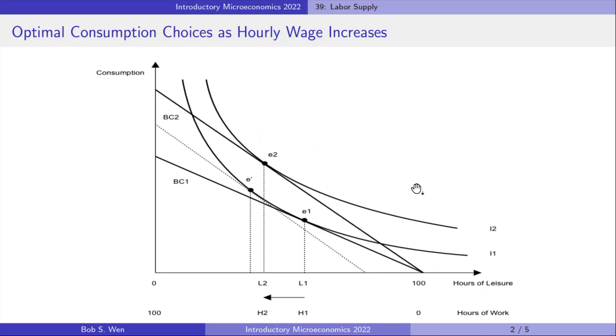Consider the decision facing Amy. Amy works for McDonald's. She has 100 hours per week to spend on either leisure or work. She spends some of her time enjoying leisure and some of it working so she can afford to buy consumption goods.